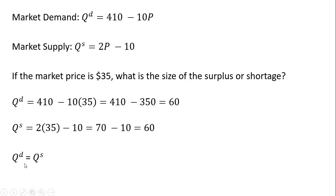So here we have quantity demanded equaling quantity supplied and that's how we define a market equilibrium. 60 equals 60. So this is equilibrium. We have neither a shortage nor surplus in this case.